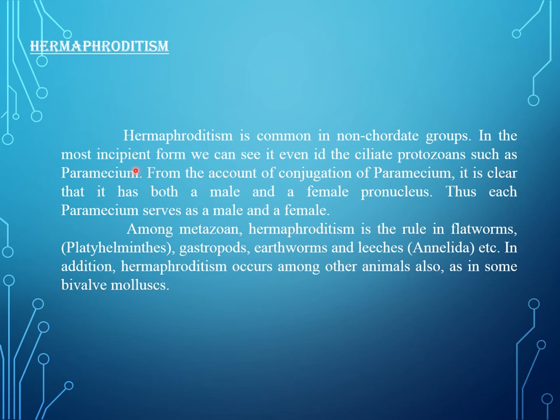Hermaphroditism is common in non-coordate groups. In its most incipient form, we can see it even in ciliate protozoans such as Paramecium. From the account of conjugation in Paramecium, it is clear that it has both a male and female pronucleus, so each Paramecium serves as both male and female. Among metazoans, hermaphroditism is the rule in flatworms (Platyhelminthes), gastropods, earthworms and leeches (Annelida), etc. In addition, hermaphroditism occurs among other animals also, as in some bivalve molluscs.